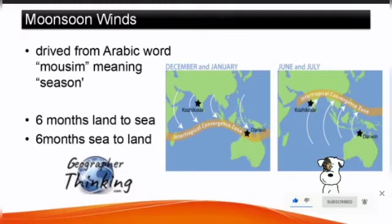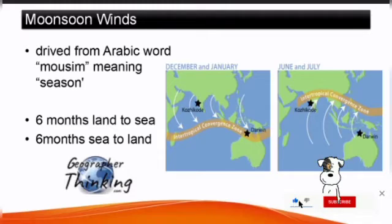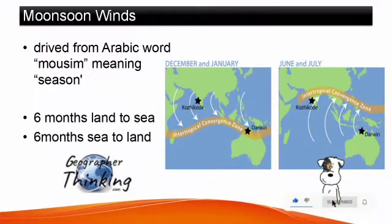This term was first applied to the winds over the northern Indian Ocean, which blew for approximately six months from the northeast — that is, from land to sea — and six months from the southwest — that is, from sea to land.